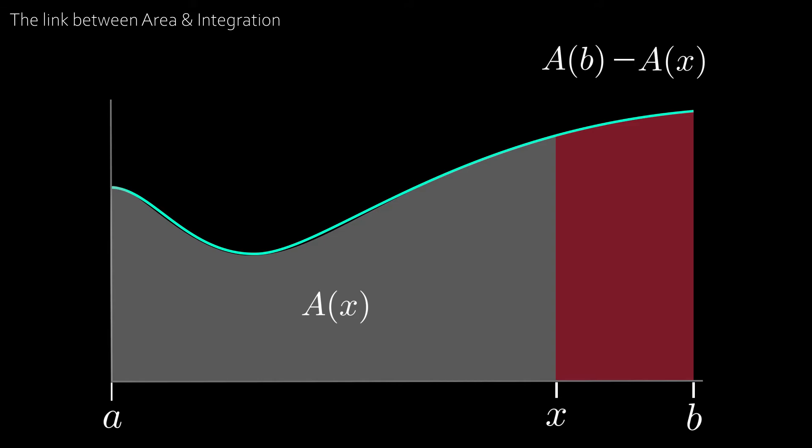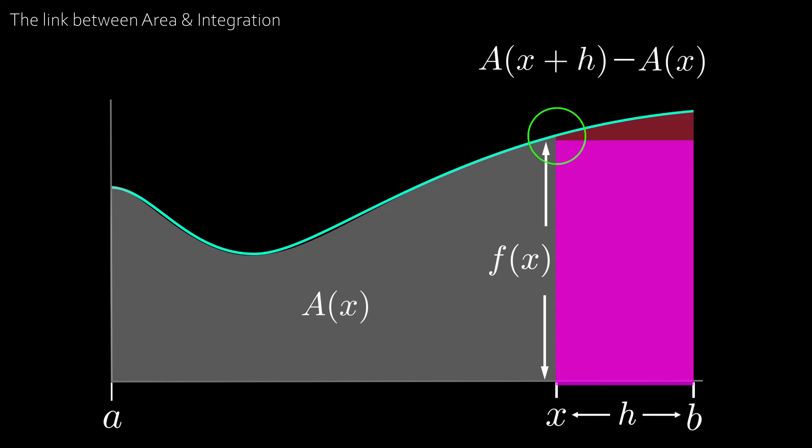Let's also say that the distance between x and b is h. So we can write A of b as A of x plus h. Now remember that we can approximate the red area with a rectangle which in this case has a length h and a height equal to f of x as that is the y value of the curve.